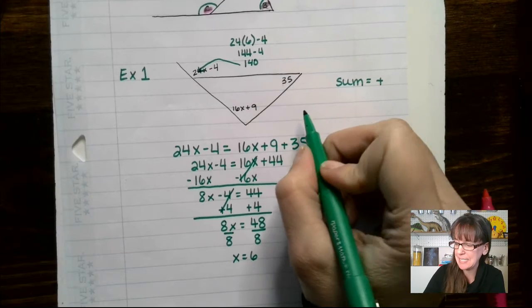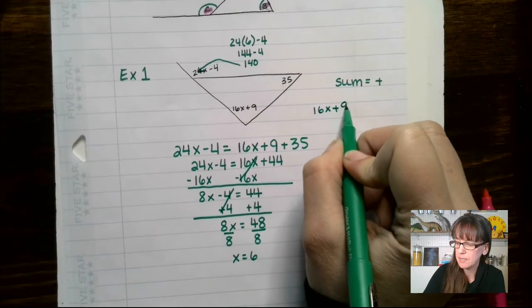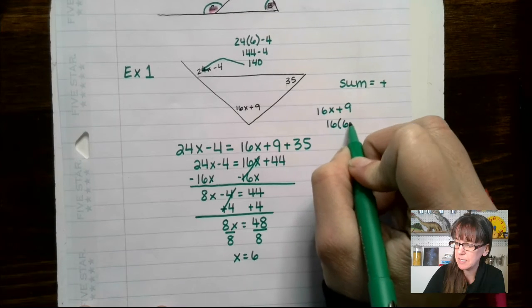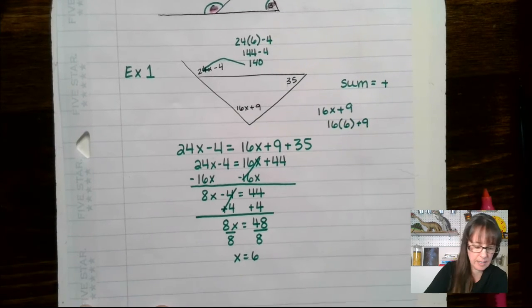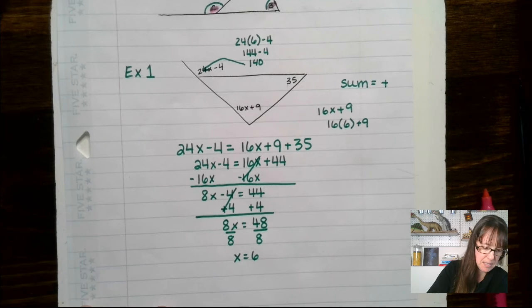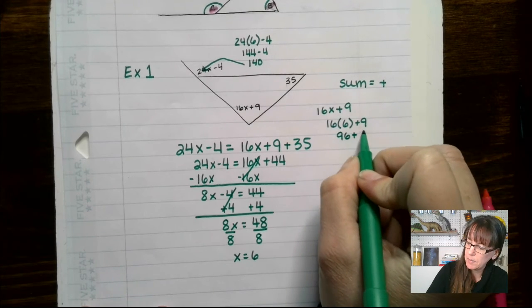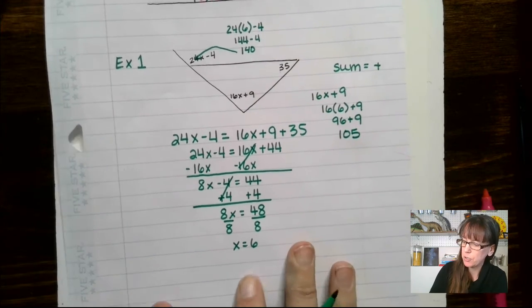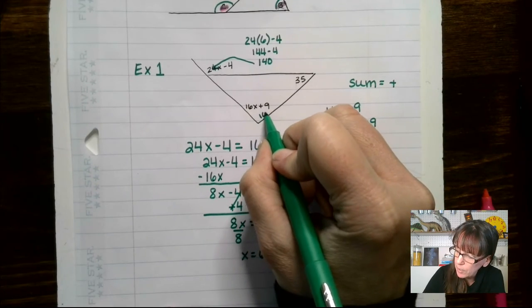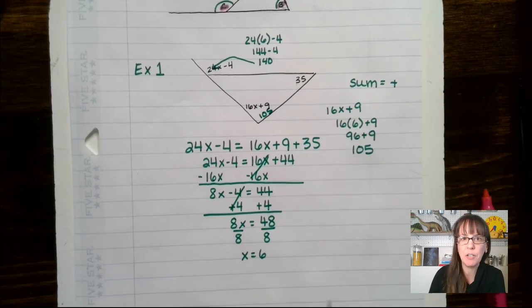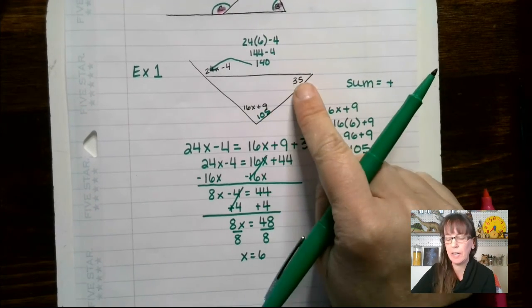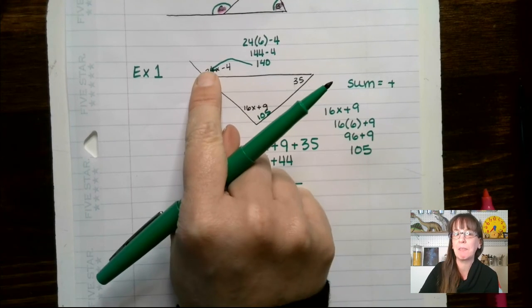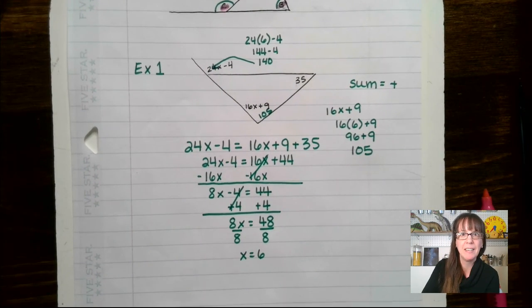Let's take a look at 16x plus 9. We know x is 6, so we're going to say 16 times 6 plus 9. If we do 16 times 6, we end up with 96 plus 9 is going to give me 105. And sure enough, so we know this guy right here is 105. This guy we already knew was 35. And so sure enough, if you take 105 and 35, you add those together, you end up with 140. And this guy right here outside is 140. See you next time.